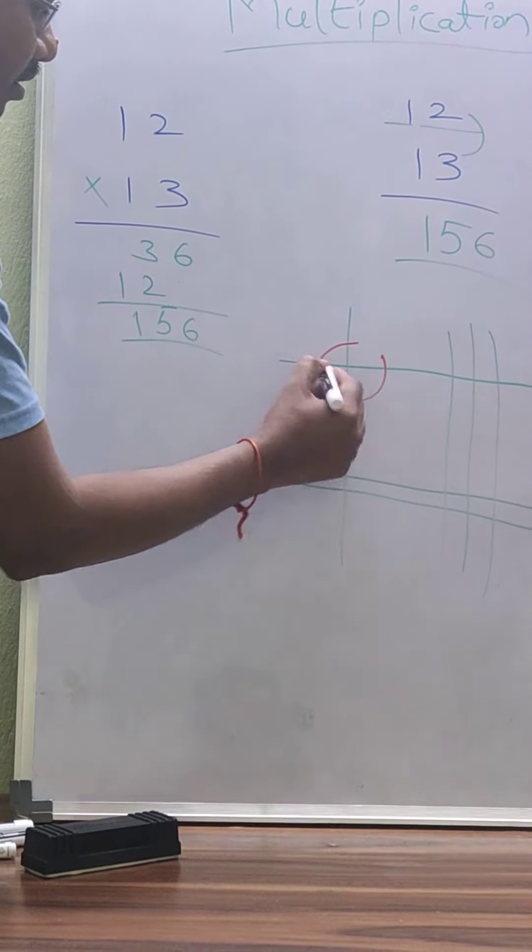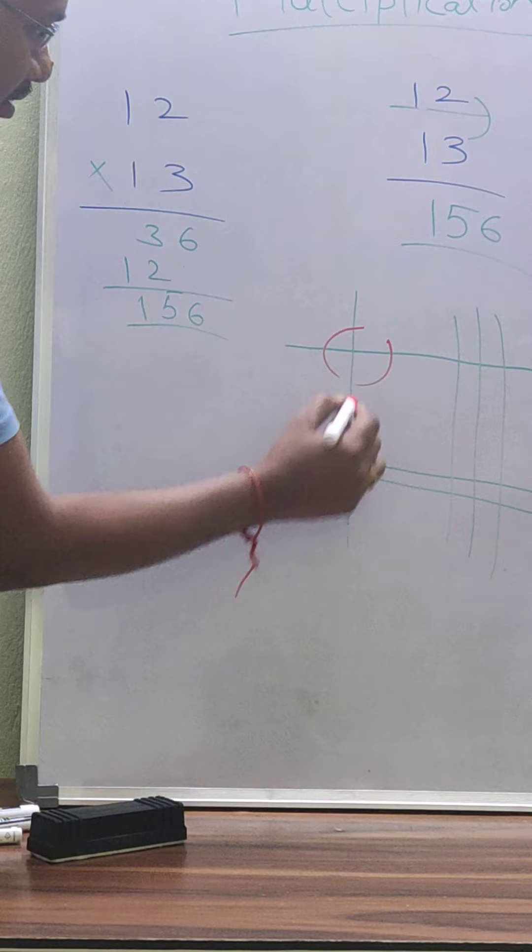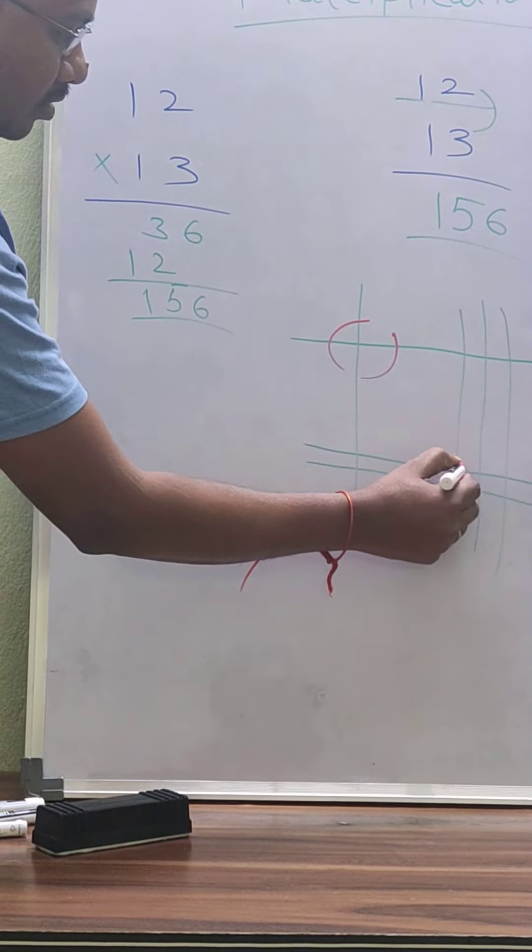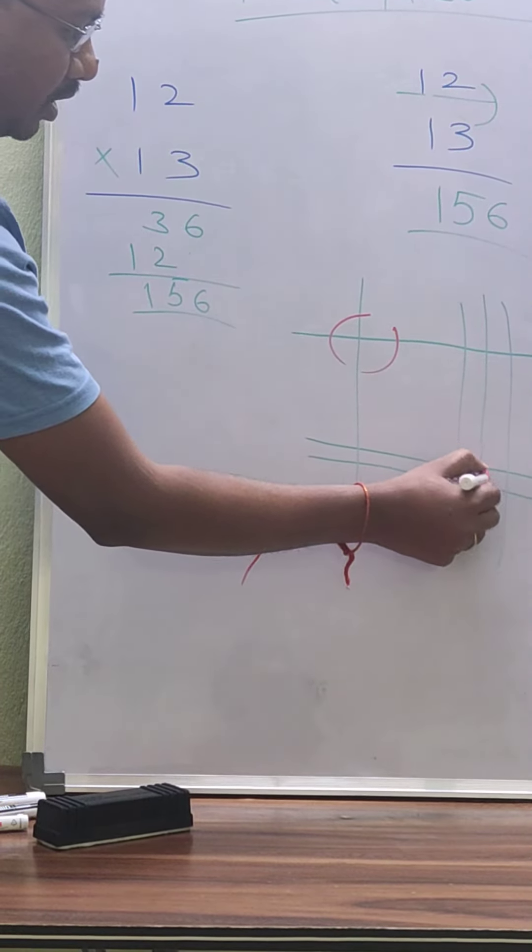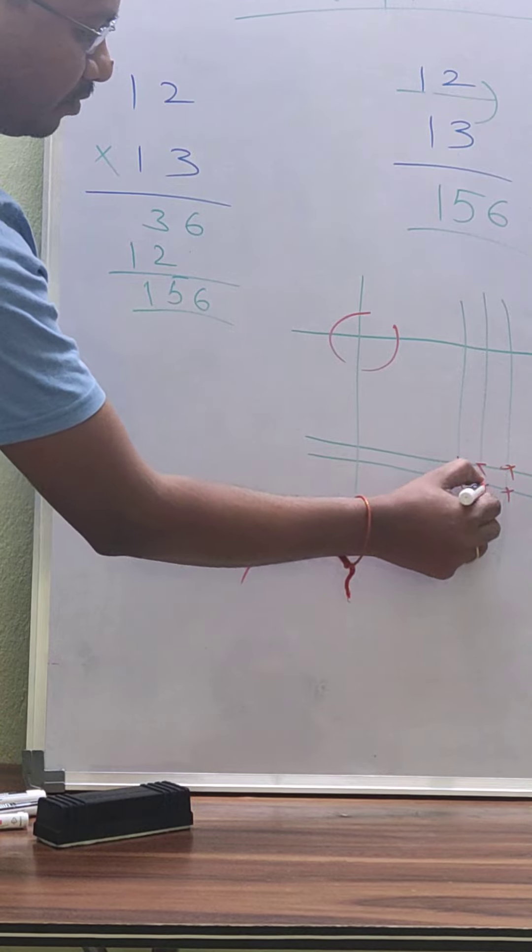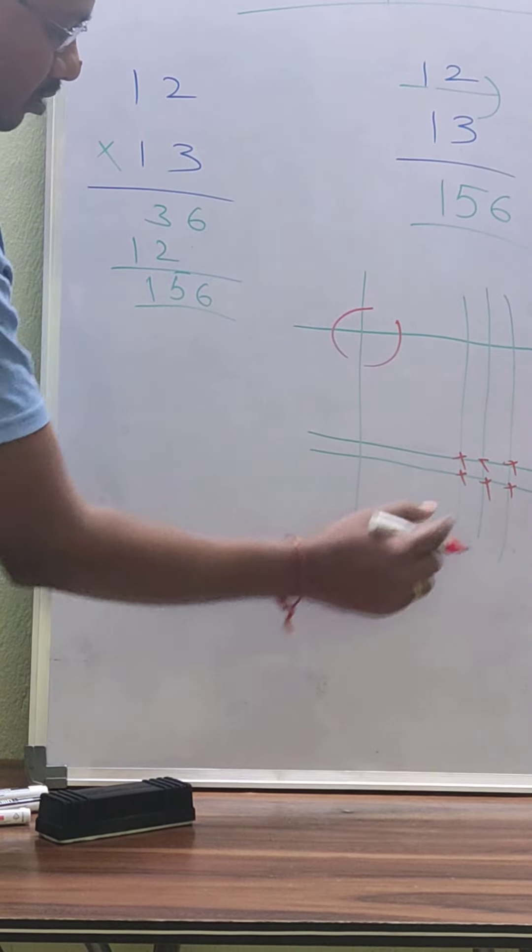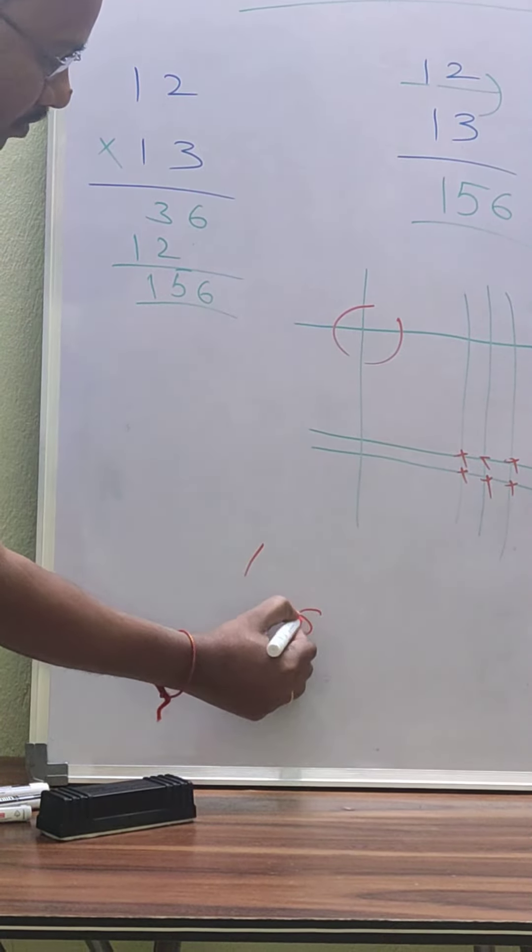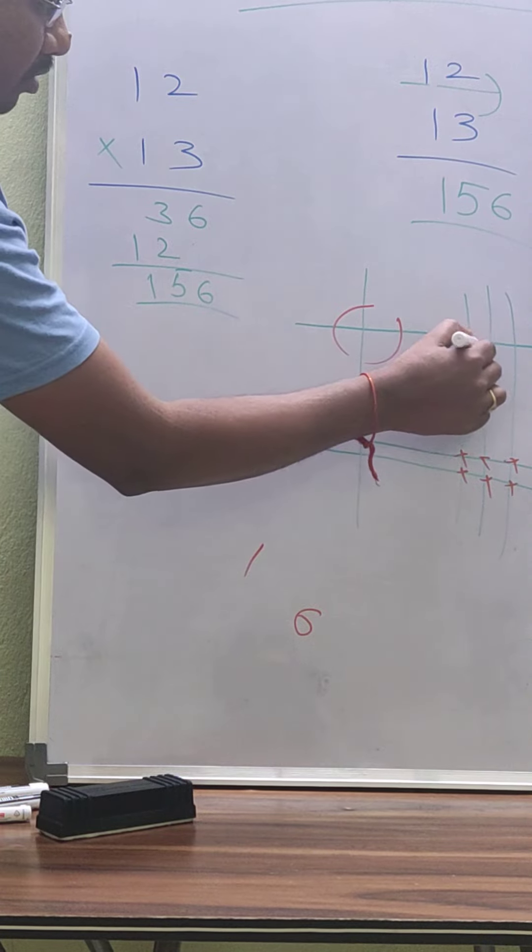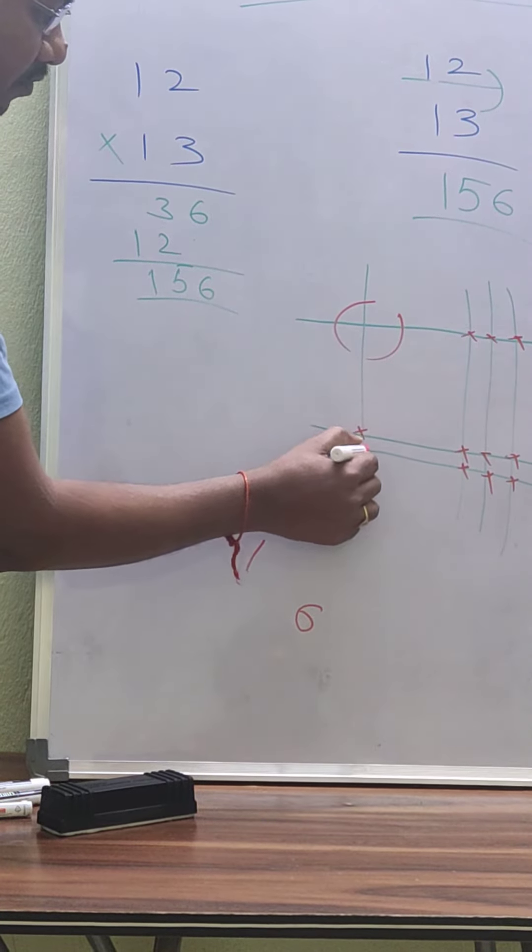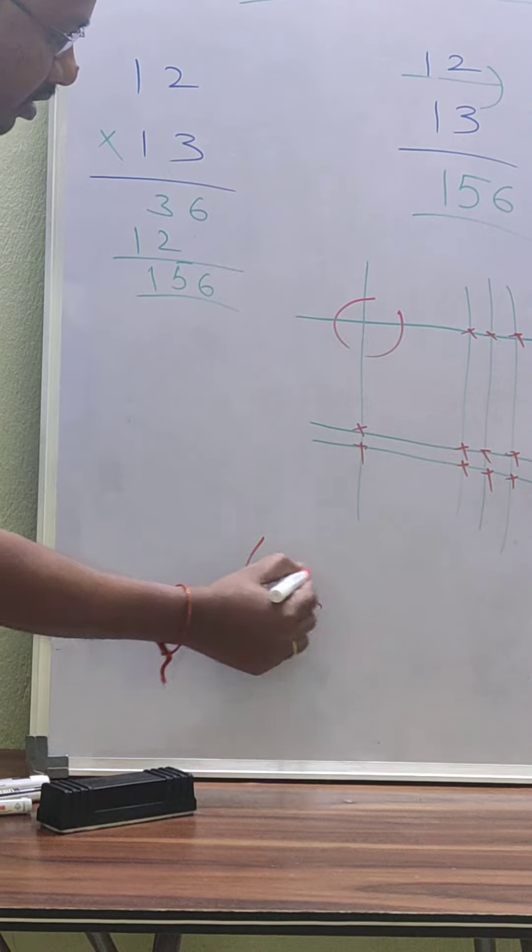Here 1, write down 1. Here 1, 2, 3, 4, 5, 6. Here 6. You can add 2 lines. 1, 2, 3, 4, 5. 1, 5, 6.